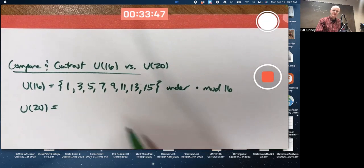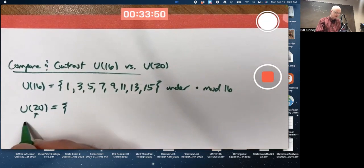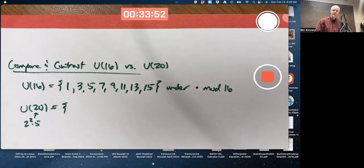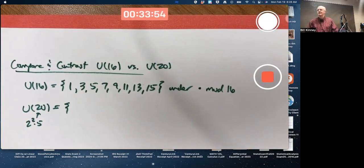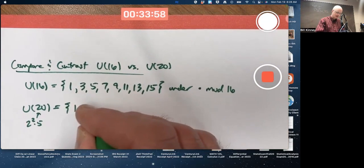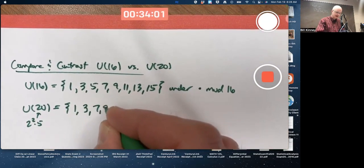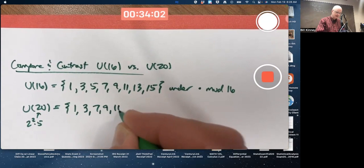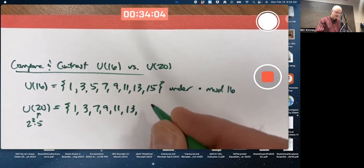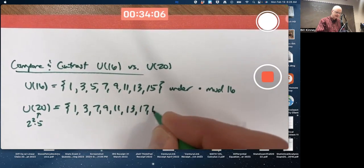What about U20? 20 is 2 squared times 5, so we want to avoid even numbers and also multiples of 5. So the elements are: 1, 3, skip 5, go up to 7, 9, 11, 13, skip 15, and go up to 17 and 19.